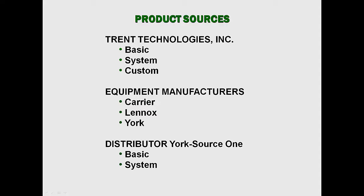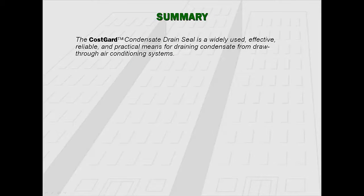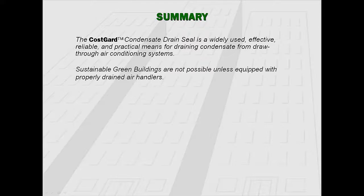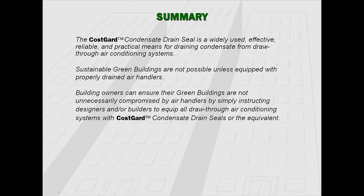York Source 1 offers basic and system kits to York distributors. In summary, the CostGuard condensate drain seal is widely used, effective, reliable, and a practical means for draining condensate from draw-through air conditioning systems. Sustainable green buildings are not possible unless equipped with properly drained air handlers. Building owners can ensure their green buildings are not unnecessarily compromised by instructing designers and/or builders to equip all draw-through air conditioning systems with CostGuard condensate drain seals, or the equivalent.